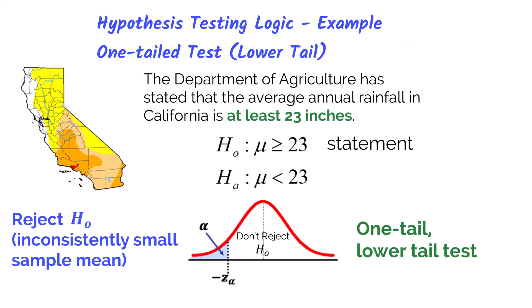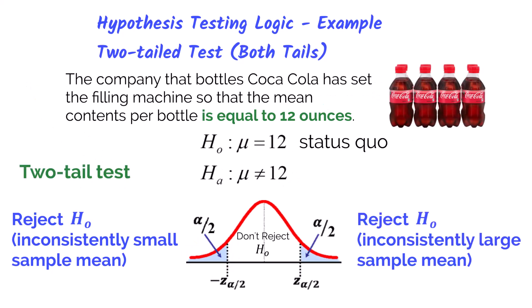For a one-tailed lower test: the Department of Agriculture has stated that the average rainfall in California is at least 23 inches, and we are not in a drought. 'At least' means it includes 23 or more inches of rain. Since the null hypothesis must have the equal sign, this statement belongs in the null hypothesis. If we take sample data and the sample mean is much lower — say 20 inches of rain — it falls in the lower tail. We reject the null, meaning we do have a drought year because the alternative hypothesis, that average rainfall is less than 23 inches, is true.